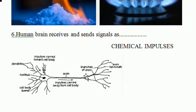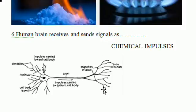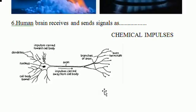The sixth question: the human brain receives and sends signals as — options like electrical signal, physical signal, and chemical impulses will be given. Out of those, we have to choose chemical impulses.